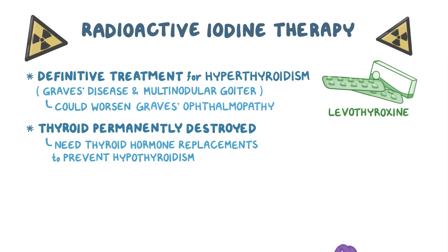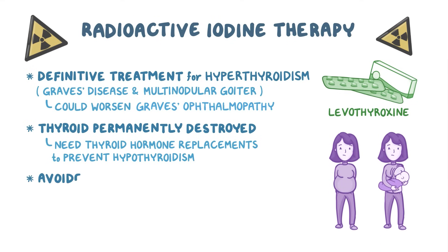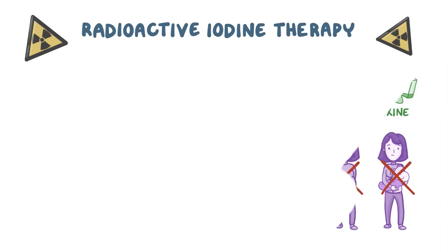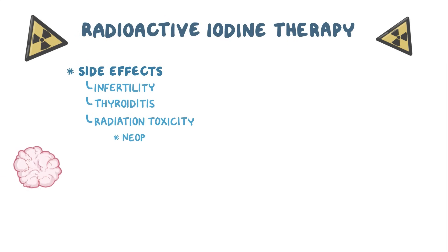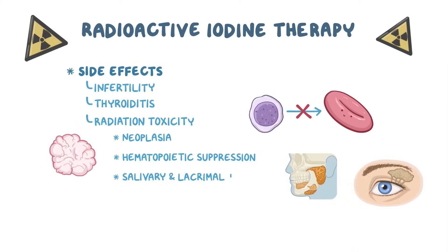Radioactive iodine crosses the placenta and is secreted in breast milk, so it should be avoided in people who are pregnant or breastfeeding. Therefore, administration of radioactive iodine to child-bearing individuals requires a negative pregnancy test. As far as side effects go, radioactive iodide can cause infertility, thyroiditis, and radiation toxicity, such as neoplasia, hematopoietic suppression, and salivary and lacrimal toxicity.